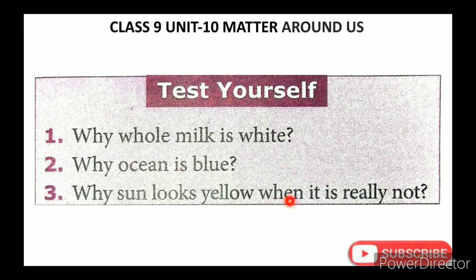The reason involves the atmosphere. Actually, the sun is white — as seen from satellites in space. The sun appears yellow or red due to scattering of light by the atmosphere.